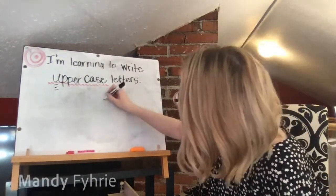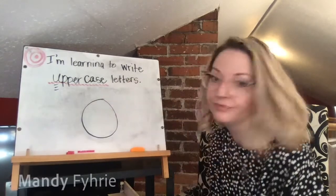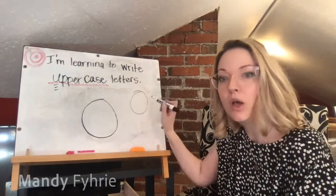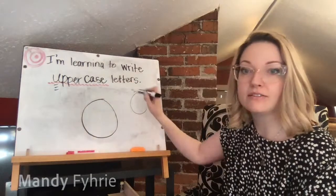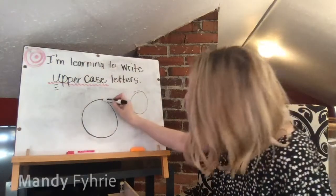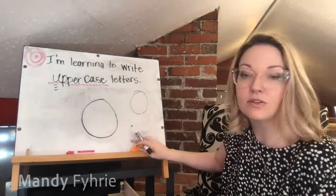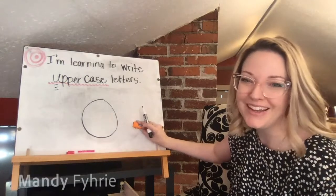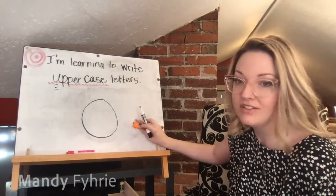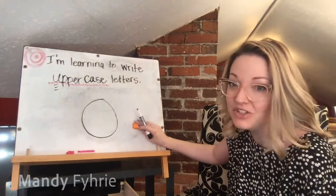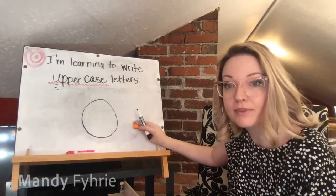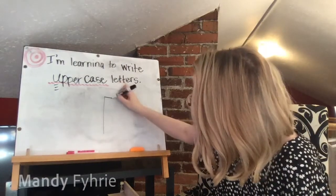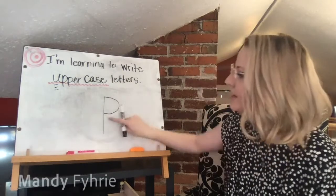Capital O: magic C all the way around and then stop. We go counter-clockwise, like a C and then all the way around. Sometimes people try to go the other direction — try it my way for a little bit. It just takes practice and time.